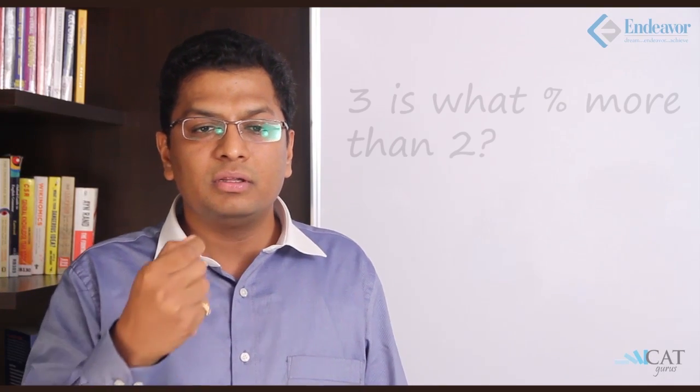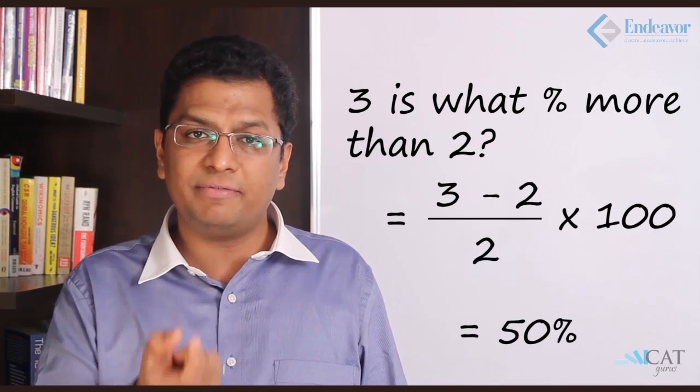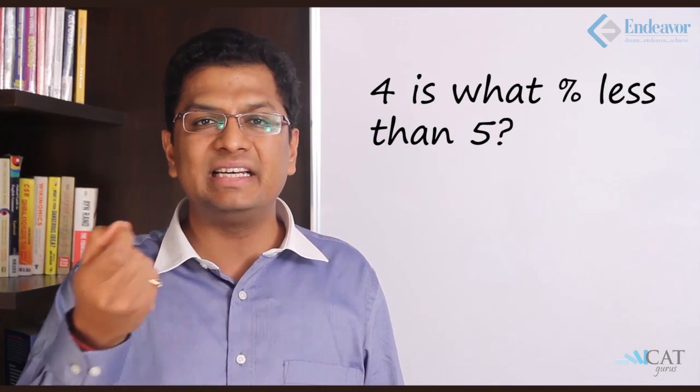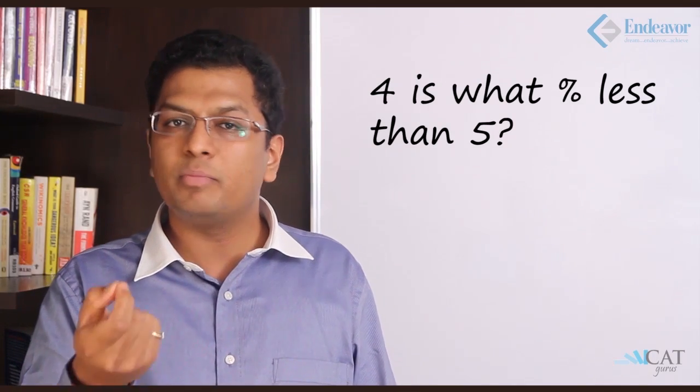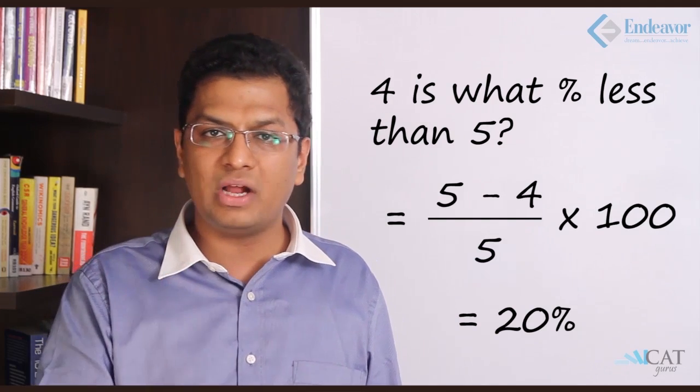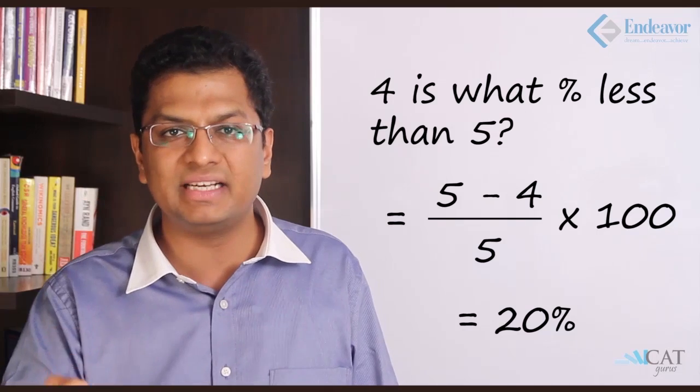Let us look at more. 3 is what percentage more than 2? So 2 is the base. Difference between 3 and 2 which is 1 upon 2 gives us 50%. 4 is how much less than 5? Base is 5. So difference is 1 and a base of 5 gives us 20%. So 4 is 20% less than 5.